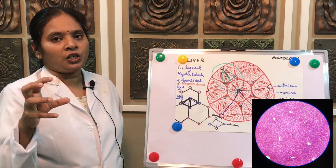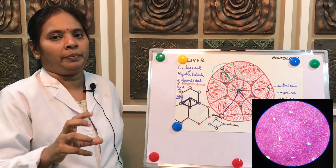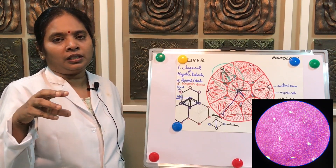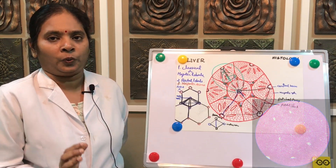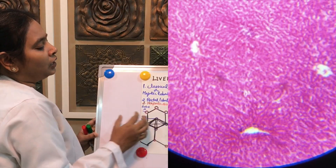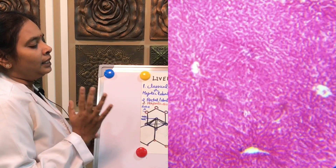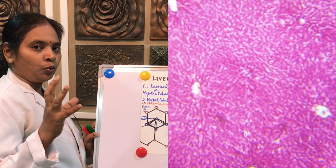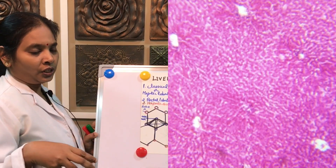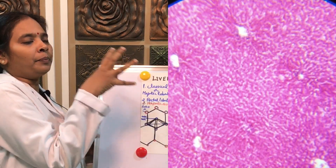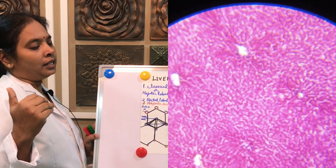For histological features, we separately study the classical lobule, portal lobule, and hepatic lobule — depending on the vein, the portal triad, or the functional arrangement. These are all the important things to know about liver histology. The liver is the largest gland with both exocrine and endocrine functions. In the next class, we will be seeing about the pancreas.